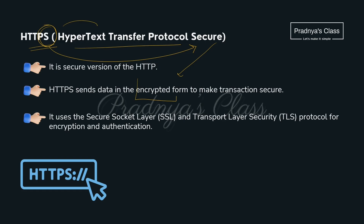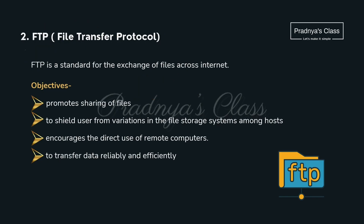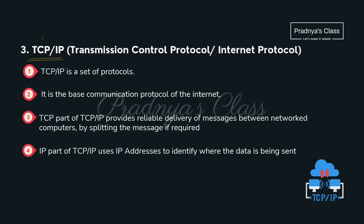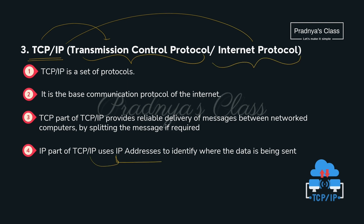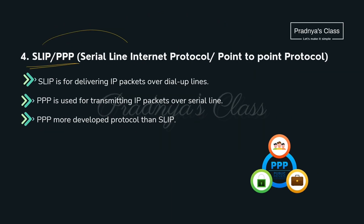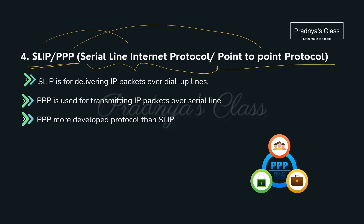The second protocol is FTP, File Transfer Protocol, used for exchanging files across the internet. The third important protocol is TCP/IP — TCP means Transmission Control Protocol and IP means Internet Protocol. IP addresses are used to identify the target computer over the network, and the TCP part provides reliable delivery of messages. SLIP means Serial Line Internet Protocol and PPP means Point-to-Point Protocol. SLIP is for delivering IP packets over dial-up lines, whereas PPP is used for transmitting IP packets over serial lines, making PPP more developed than SLIP.